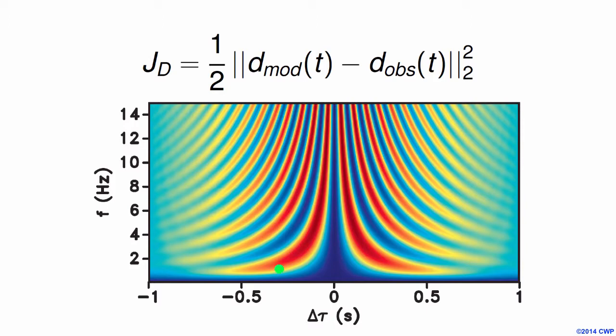Even in this very simple 1D example, the objective function is quite complex. If we use a very low frequency — around 1 hertz — we can converge to the global minimum, which is delta tau equal to zero. However, if we start at a higher frequency, we start getting local minimum contributions for the problem. And this is our final result.